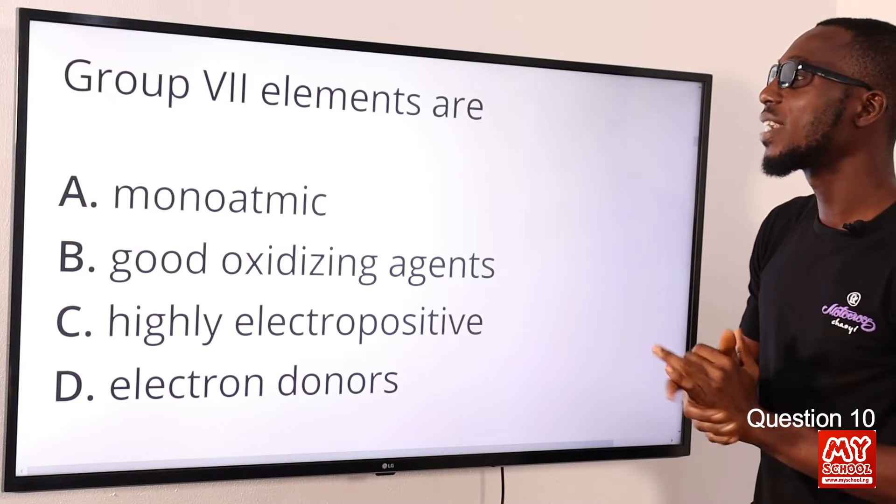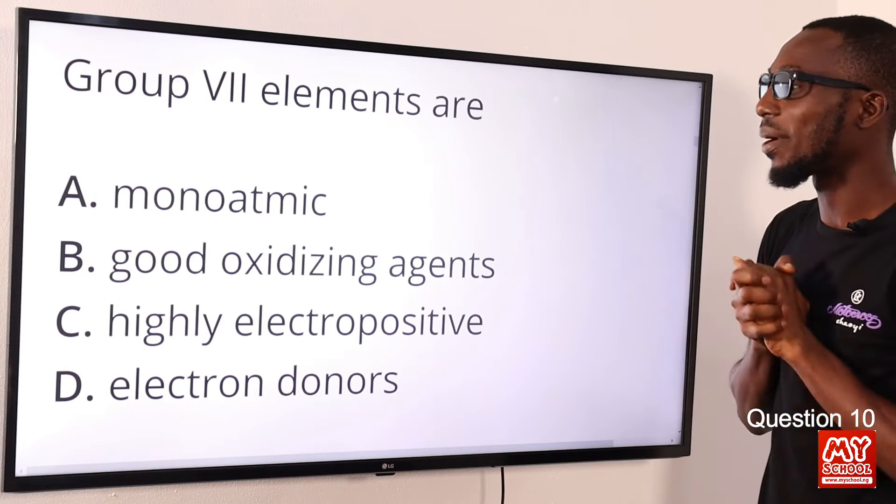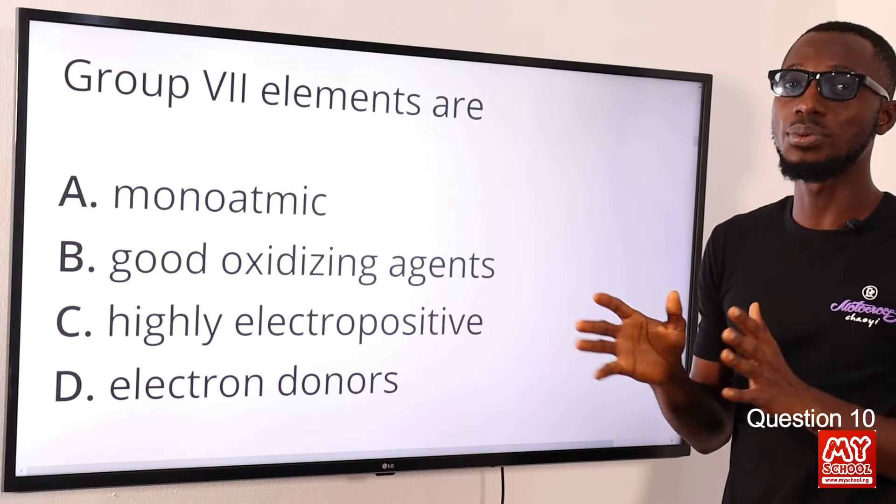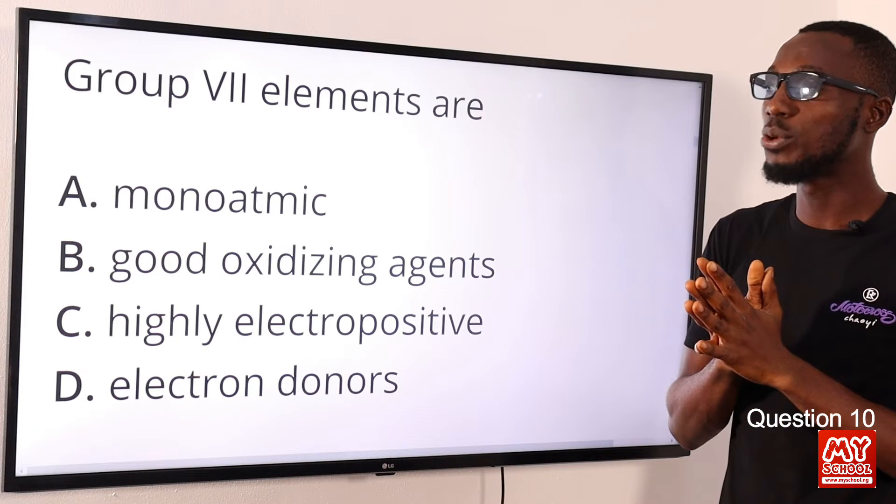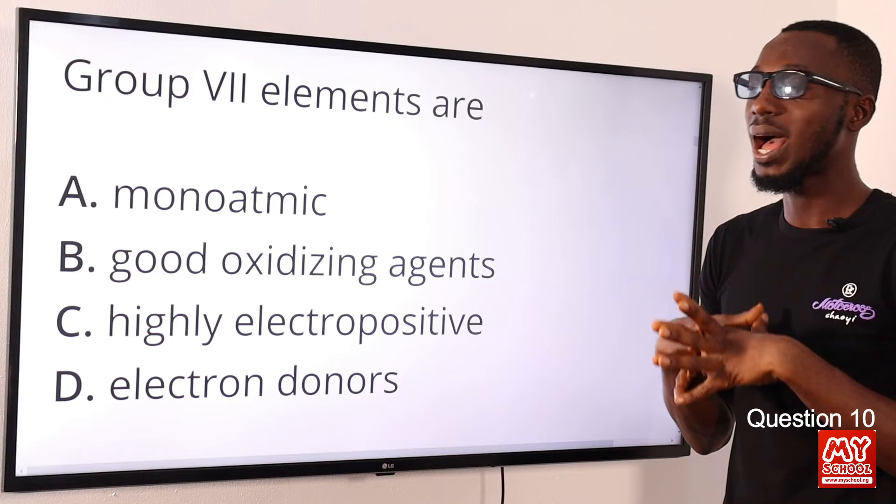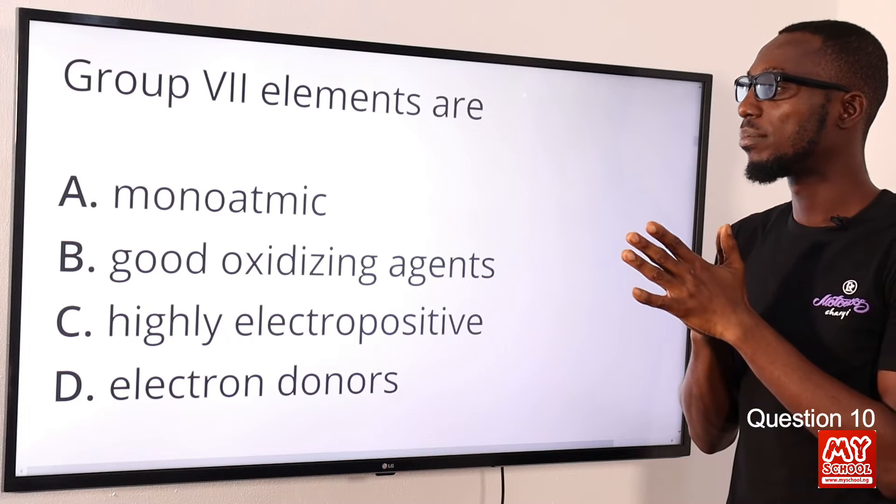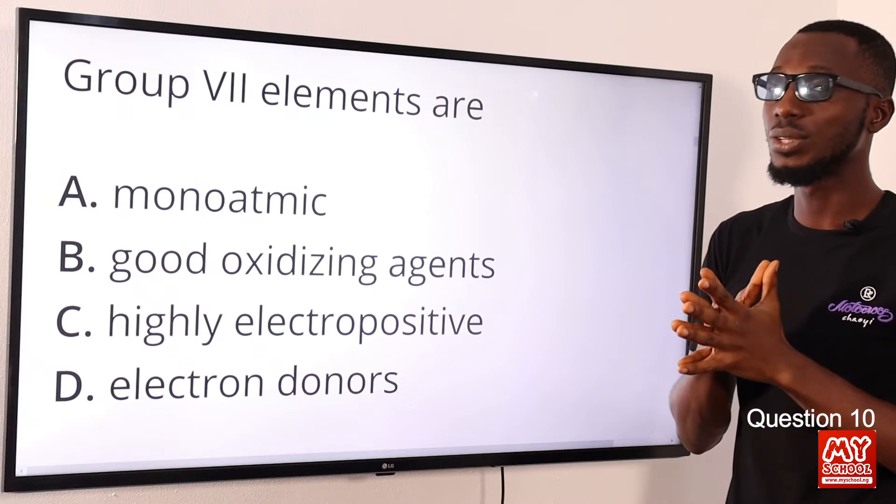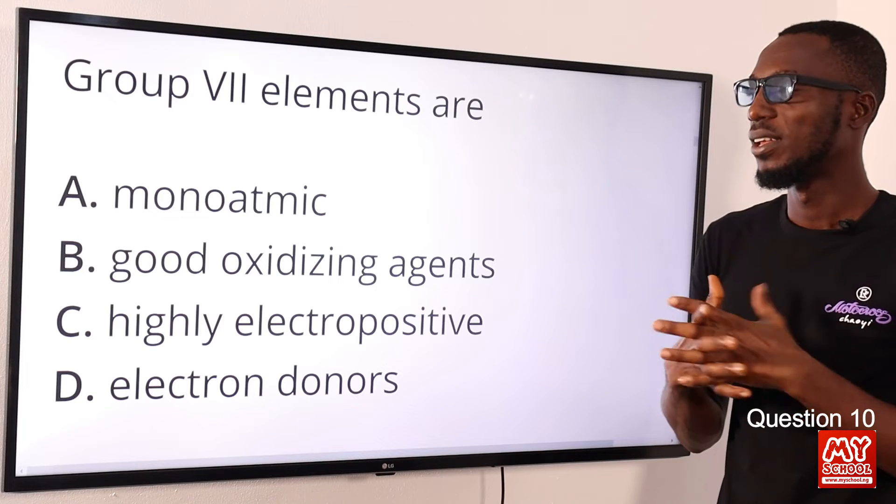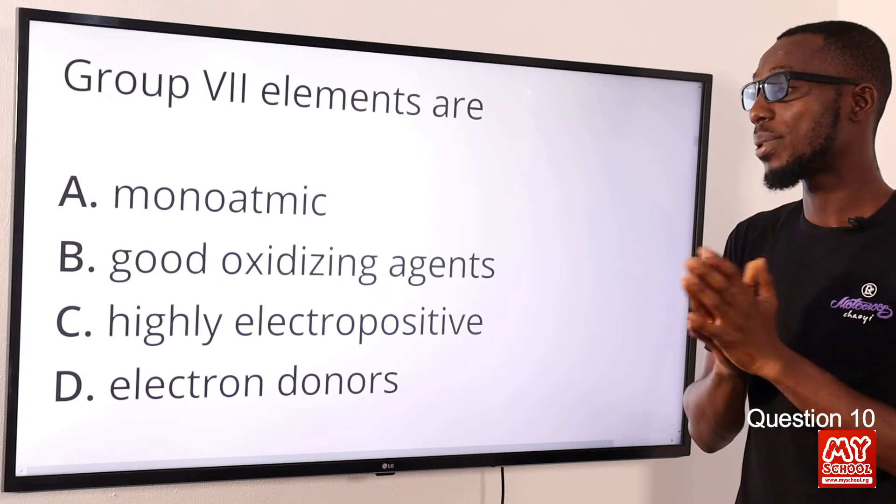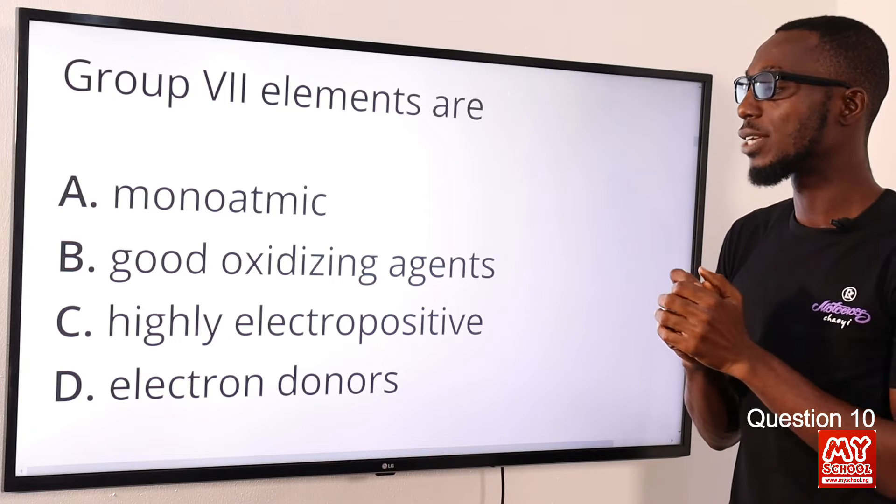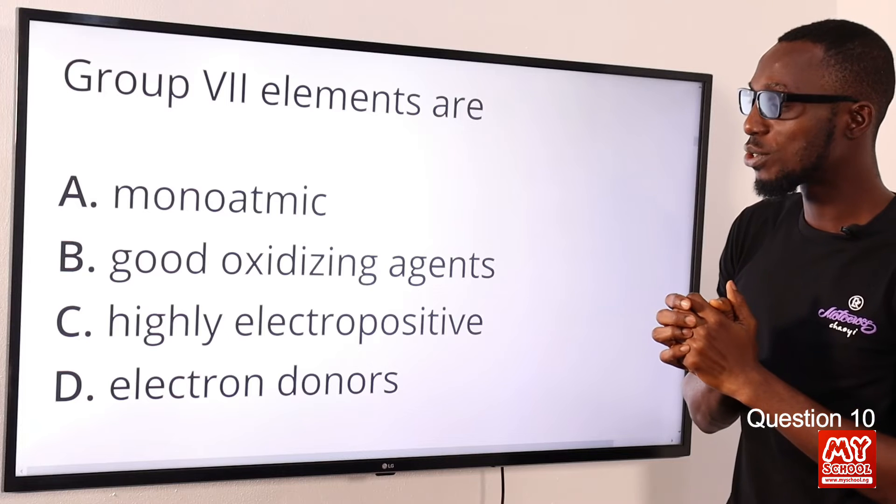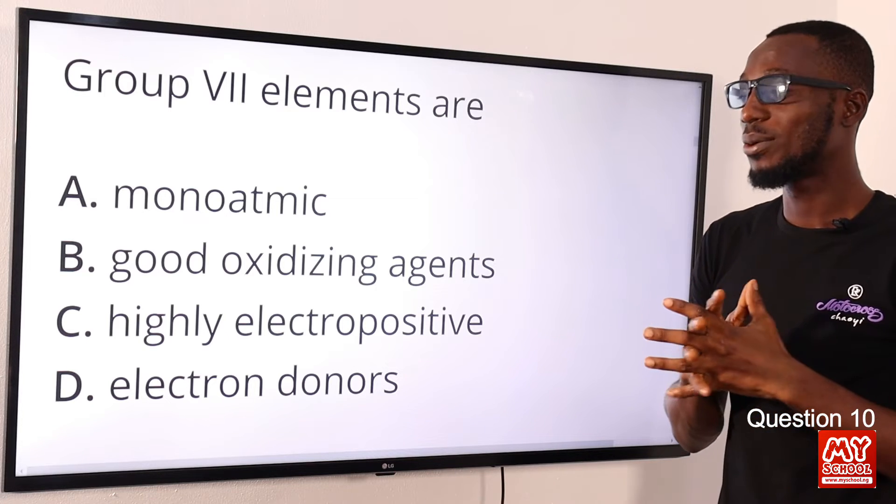Question 10: Group 7 elements are what? What characteristic of group 7 elements can we find to be correct in the options provided? Let's look at option A: monoatomic—that's incorrect, group 7 elements are diatomic. B: they are good oxidizing agents—that is very correct. Group 7 elements are good oxidizing agents; you're talking about chlorine, fluorine, talking about halogens.